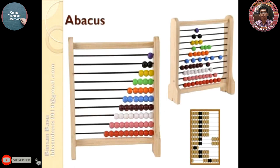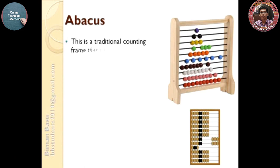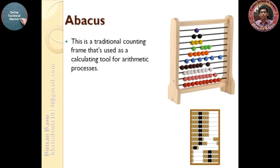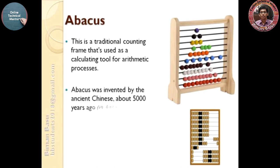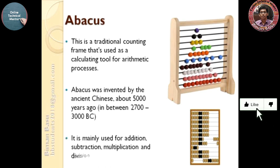Abacus. This is a traditional counting frame that's used as a calculating tool for arithmetic processes. Abacus was invented by the ancient Chinese about 5000 years ago, in between 2700 to 3000 BC. It is mainly used for addition, subtraction, multiplication, and division.